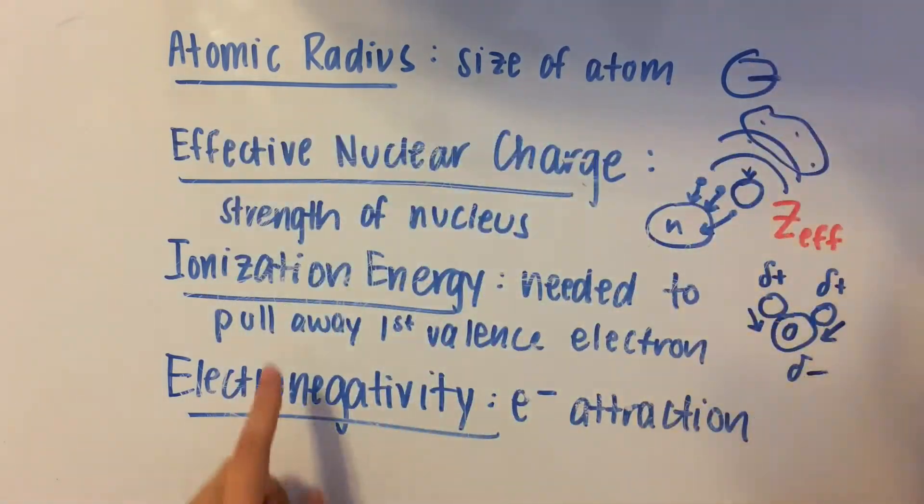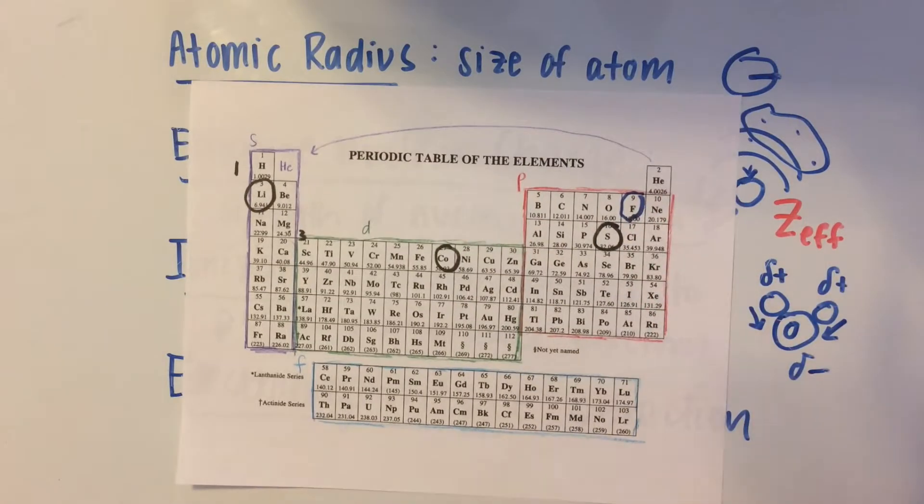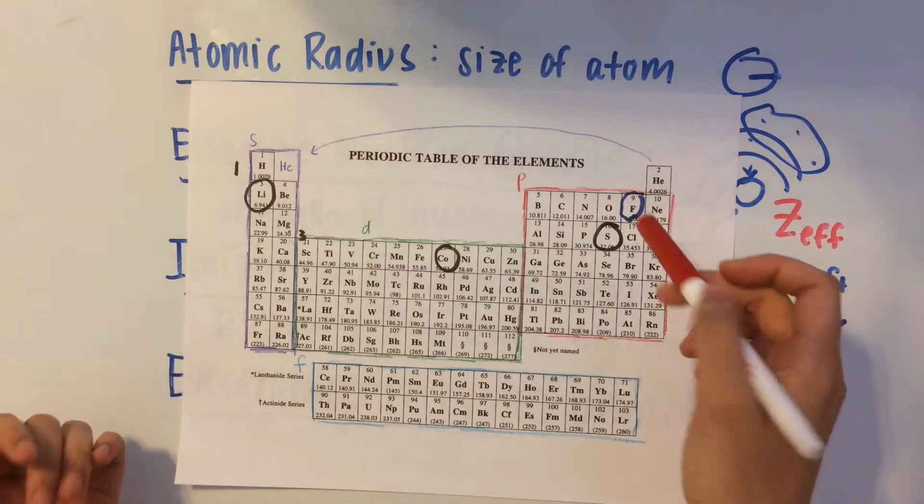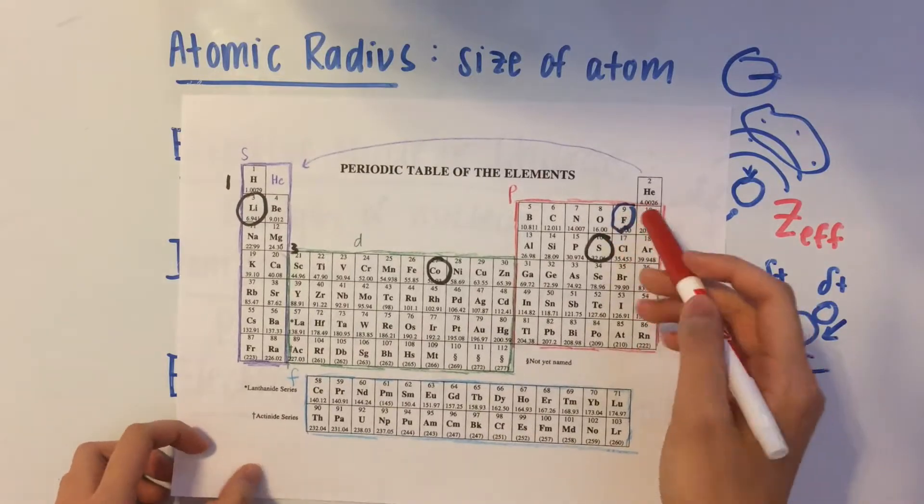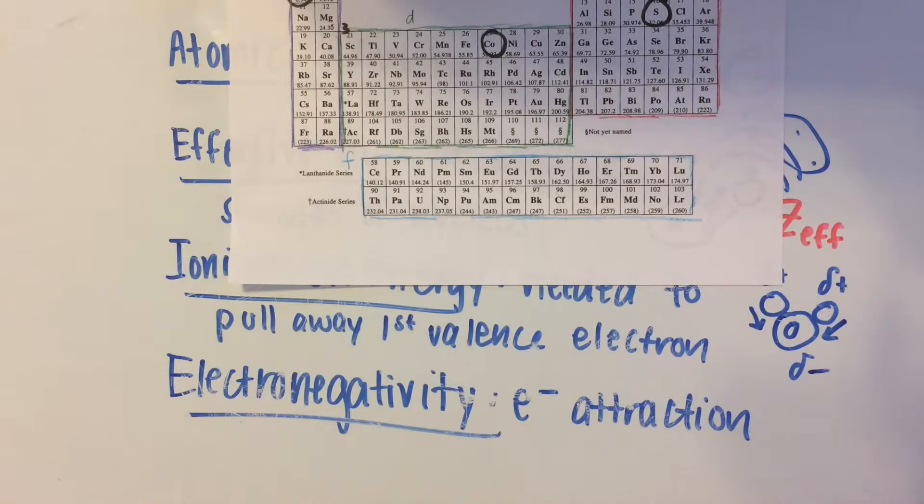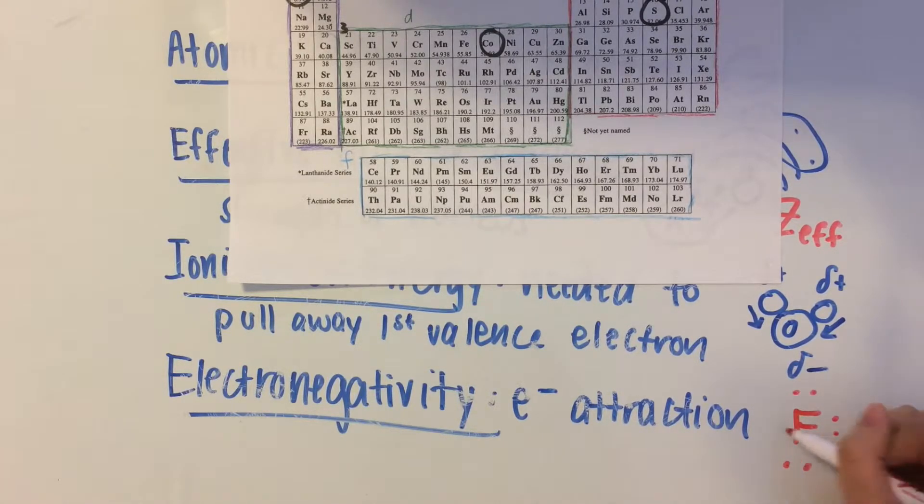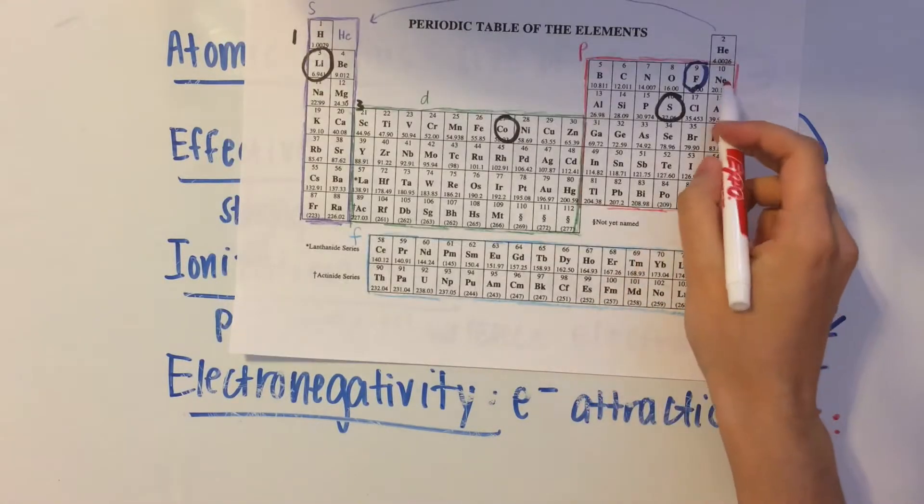And the next one is ionization energy. So fluorine has a very high ionization energy. Remember, ionization energy is the amount that you need to put in to take away its valence electron. And it wants to hold on to its electrons because this also has to do with its Lewis structure, by the way. So fluorine's Lewis structure looks something like this. It's missing one more valence electron to have a complete shell.